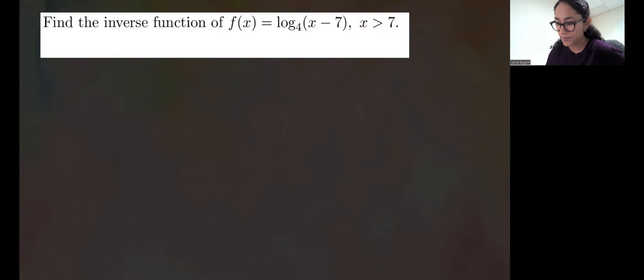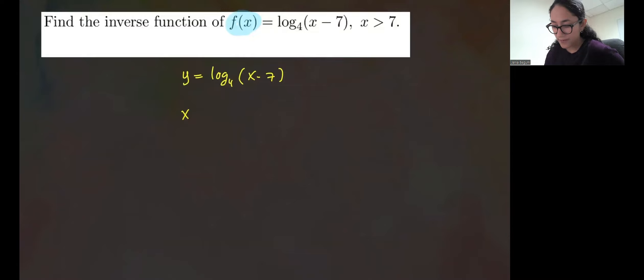So first thing you want to do is let f of x be equal to y. So we have y is equal to log base 4 of x minus 7. And then we're going to interchange x and y. So we have now x is equal to log base 4 of y minus 7.